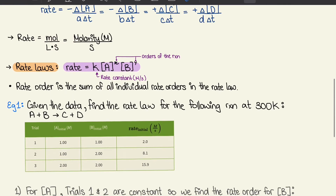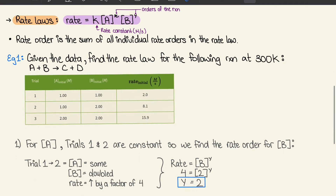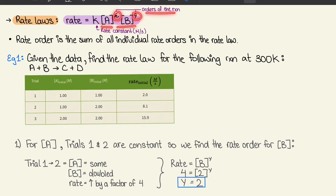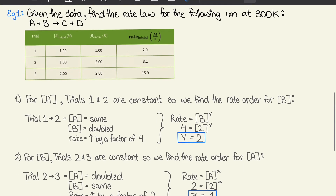Moving on to rate laws — we have an equation where rate equals K, the rate constant (with units of molarity per second), times the concentration of the reactants raised to the powers X and Y, which are the orders of the reaction. The overall rate order is the sum of all individual rate orders in the rate law.